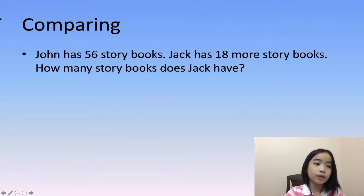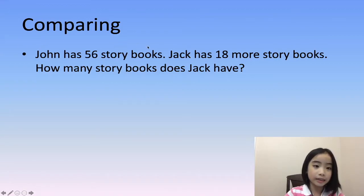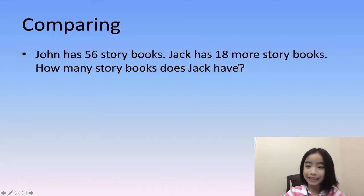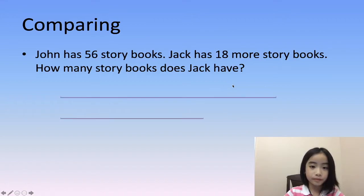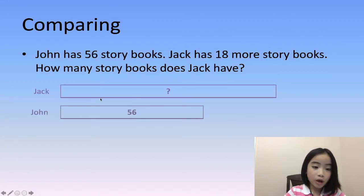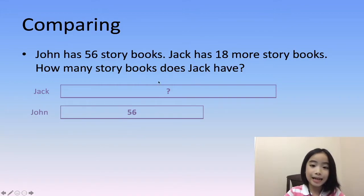Now let's do the last type called comparing. John has 56 storybooks. Jack has 18 more storybooks than John. How many storybooks does Jack have? So we know that John has 56 storybooks and Jack has 18 more storybooks.